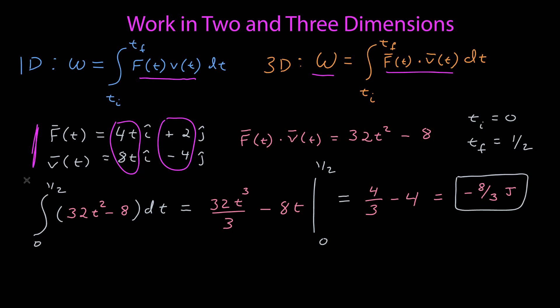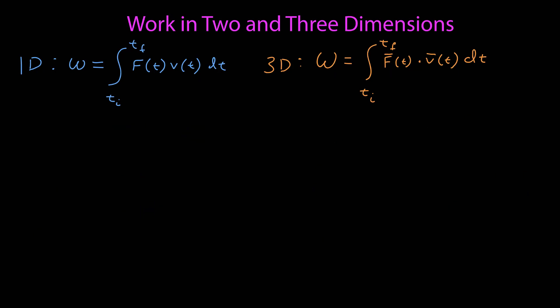Looking at work in this form, however, can give us a really important insight, which is that the work is equal to 0 if the force is ever perpendicular to the velocity. And that comes from this definition of the dot product. We know the dot product of any two vectors that are perpendicular is equal to 0.